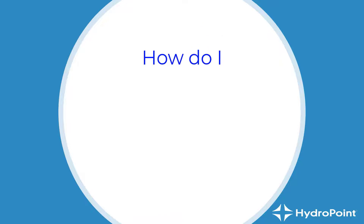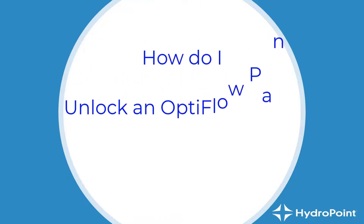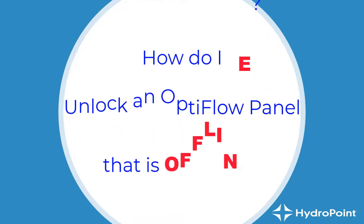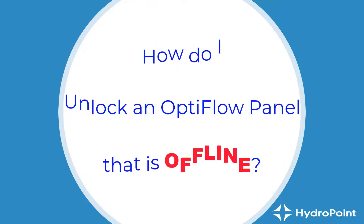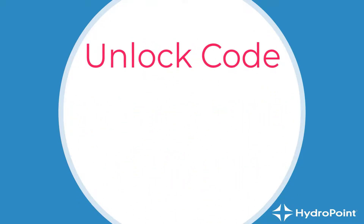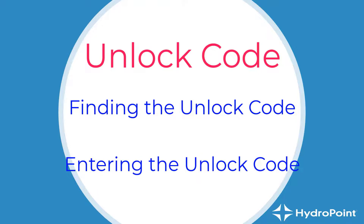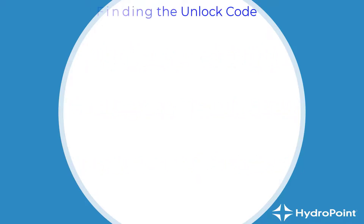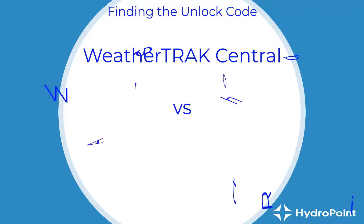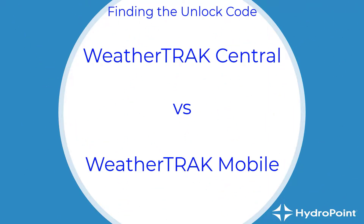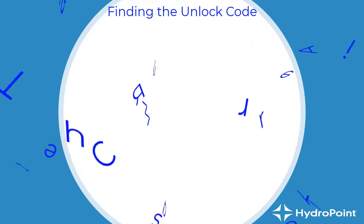Outside of the ordinary, there might be times when you need to unlock the controller while troubleshooting — more specifically, when you need to unlock an offline controller. To unlock a controller that's offline, you have to manually enter the unlock code. You need to know how to find the unlock code and enter it. The process starts right where you're used to going to unlock controllers — you can find the unlock code at either WeatherTrack.net or WeatherTrack Mobile.